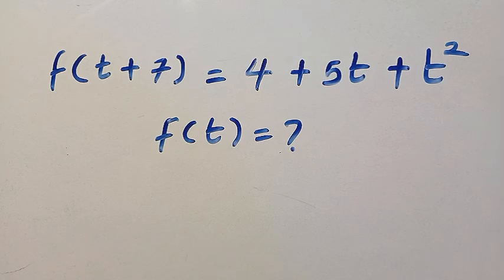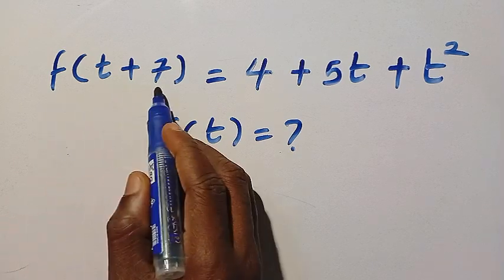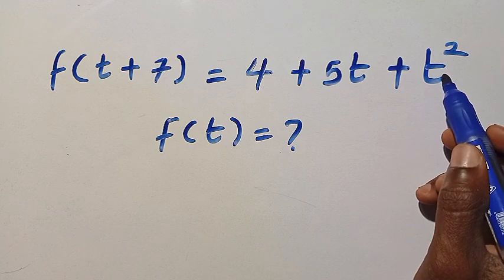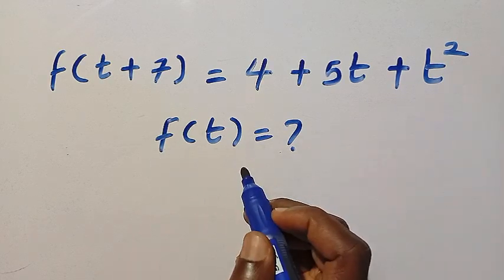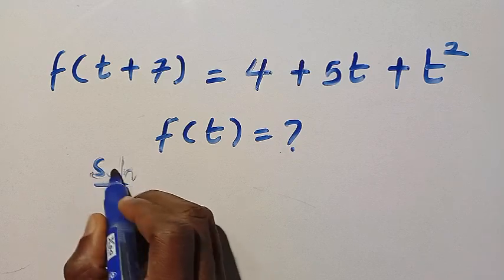Good day viewers, you are welcome. Here we have a nice functional equation, given that f of t plus 7 equals 4 plus 5t plus t squared. And what is f of t? So let's solve this problem using two different methods.